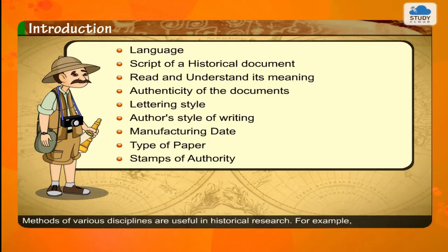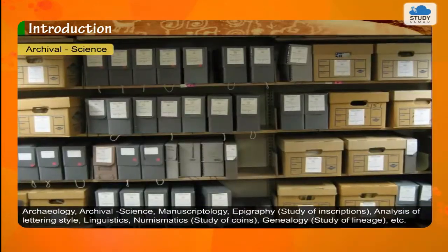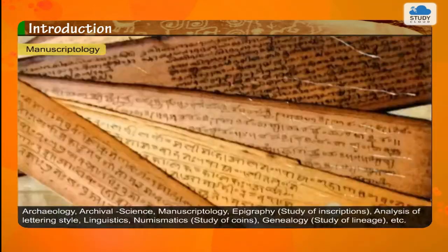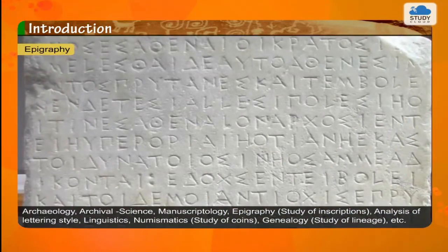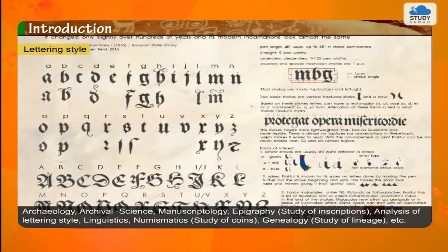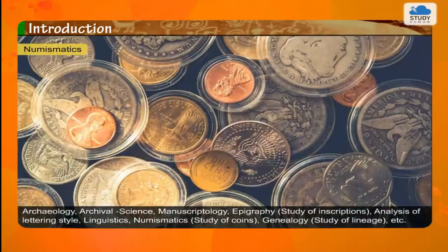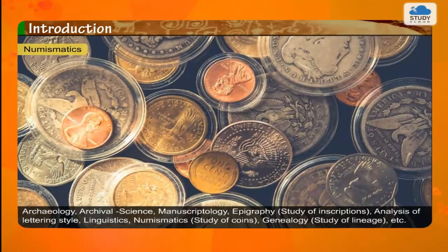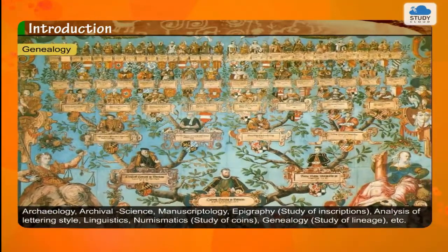Methods of various disciplines are useful in historical research. For example: archaeology, archival science, manuscriptology, epigraphy (that is, the study of inscriptions), analysis of lettering style, linguistics, numismatics (that is, the study of coins), genealogy (that is, the study of lineage), etc.